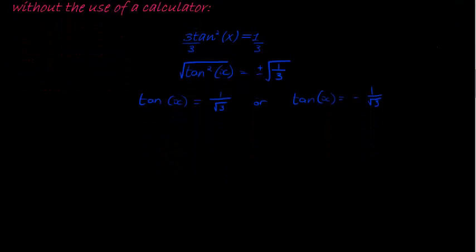From here on, what we will do is find the reference angles, and you can see we're going to have two reference angles. This is y over x, so that I have, if I draw my triangle, I have y is 1, x is square root of 3.